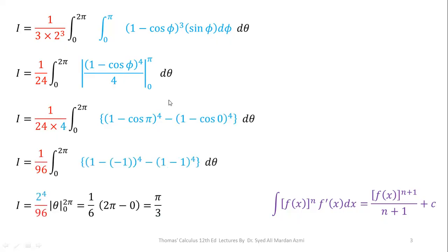Making the simplification we have 2⁴/96. Integration of dθ for the limit 0 to π is θ. Applying the limits we have 2π/6 which is equal to π/3.